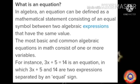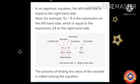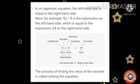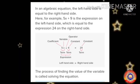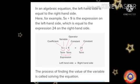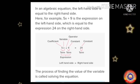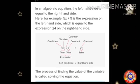Okay, here the expressions are separated by an equal sign. In algebraic equation, the left hand side is equal to the right hand side. Here, for example, 5x plus 9 is an expression on the left hand side, which is equal to the expression 24 on the right hand side. The process of finding the value of the variable is called solving the equation.